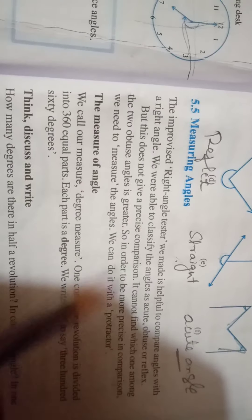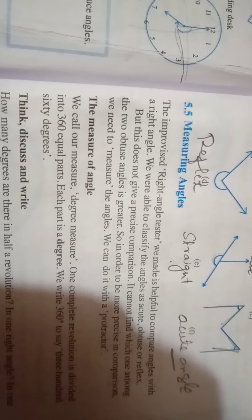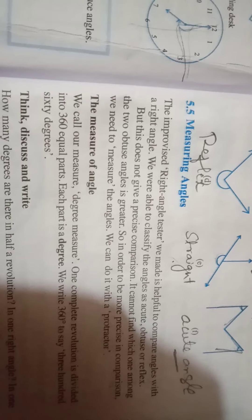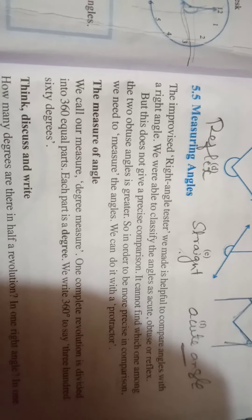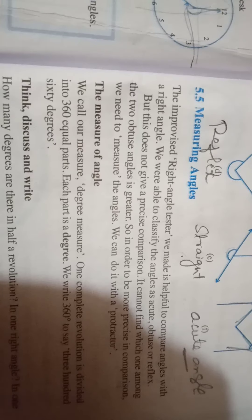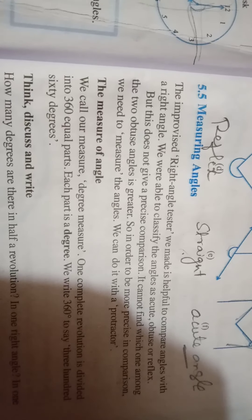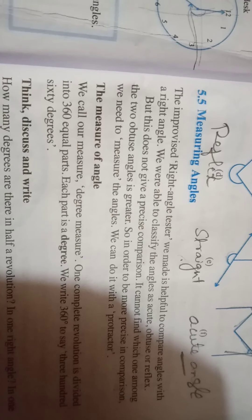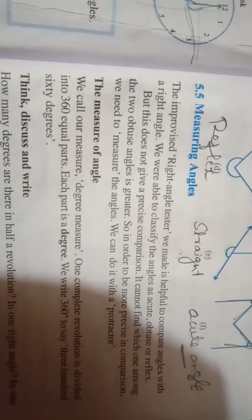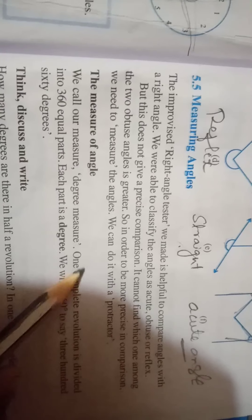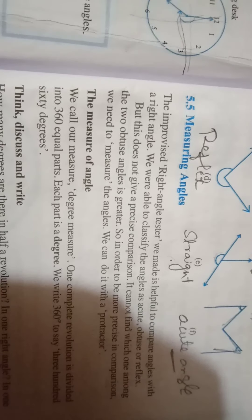Next is measuring angles. We use degree measures. One complete revolution is divided into 360 equal parts. Each part is called a degree, written as 1°. So one full revolution equals 360 degrees.